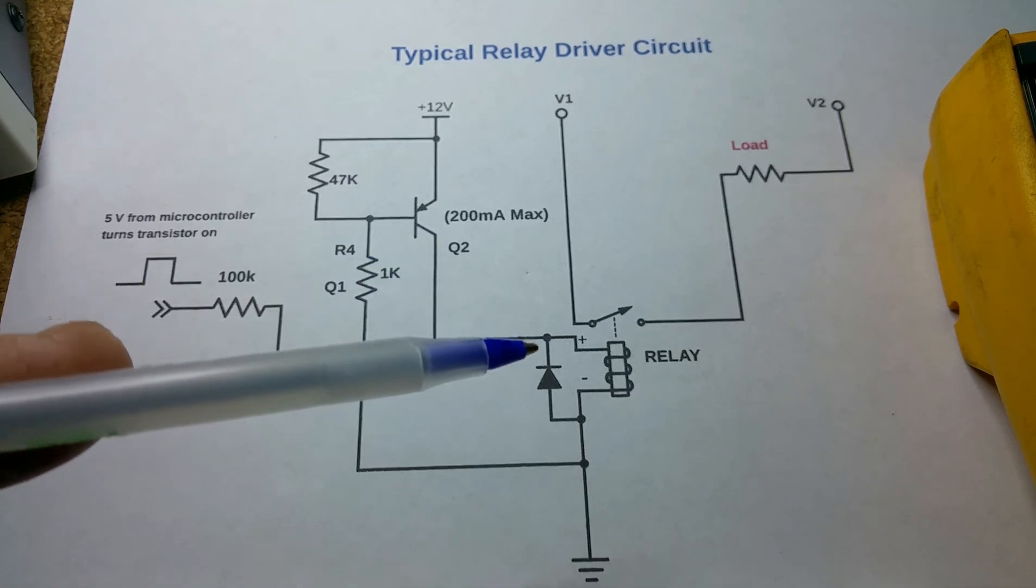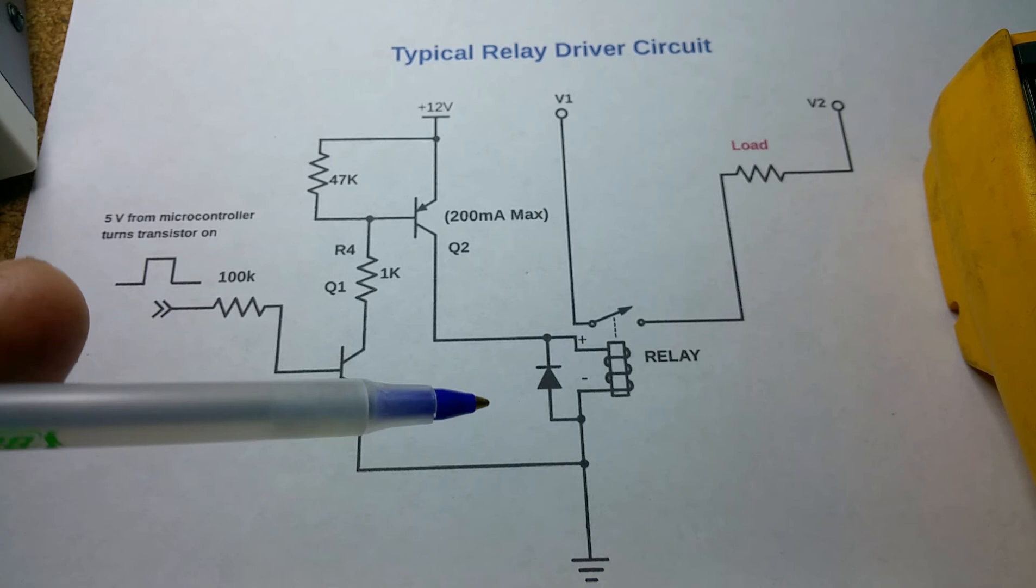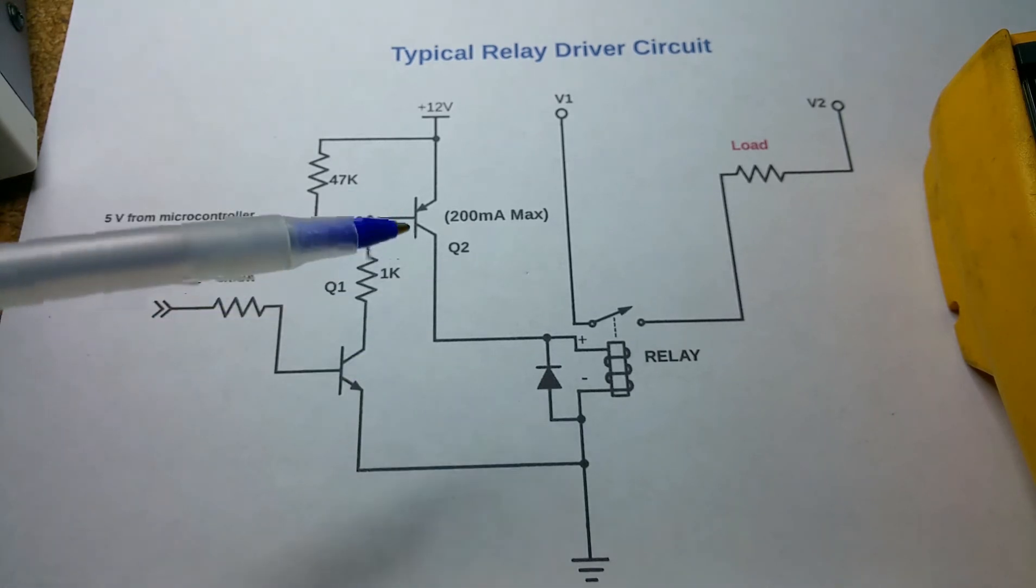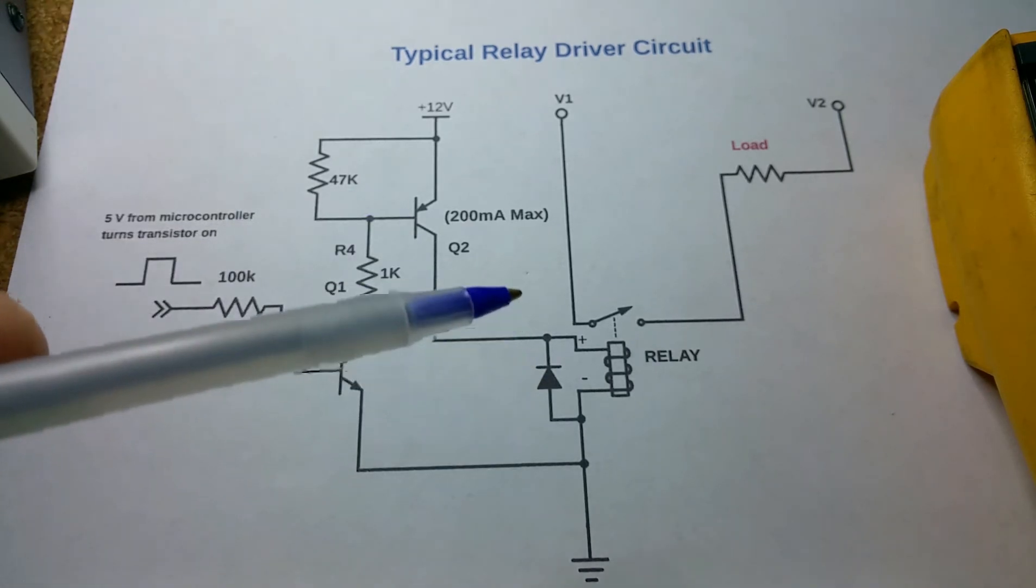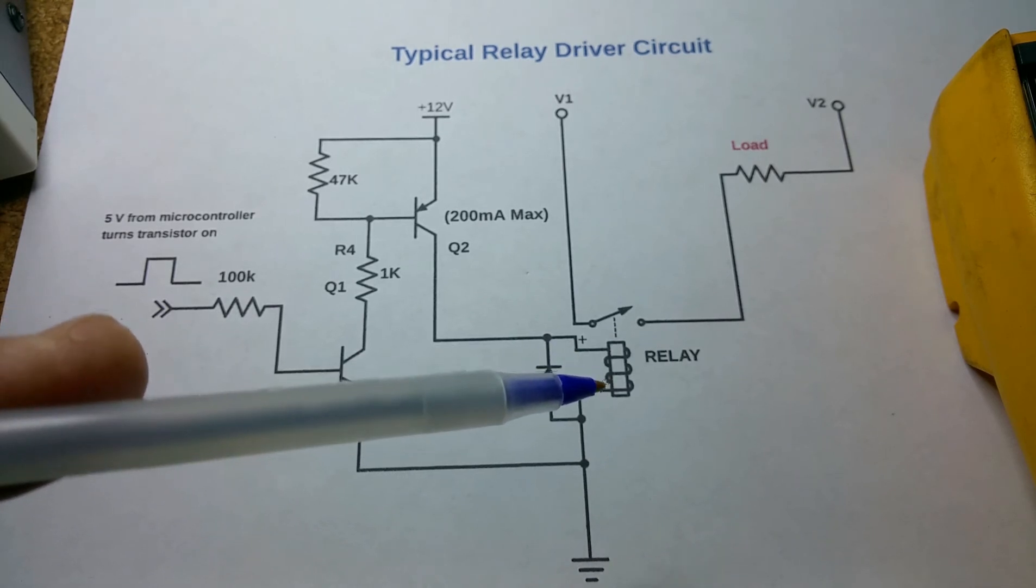This particular relay that we have here on the protoboard is about a hundred ohms at 12 volts, so it's going to be just over 100 milliamps, which is less than half of what this transistor can supply.